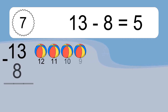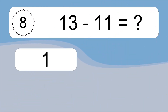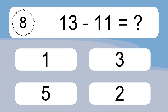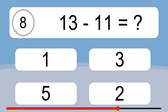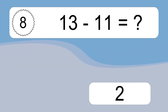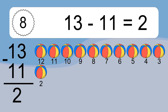13 minus 8 equals 5. Let's count it. 12, 11, 10, 9, 8, 7, 6, 5. 13 minus 11 equals what?